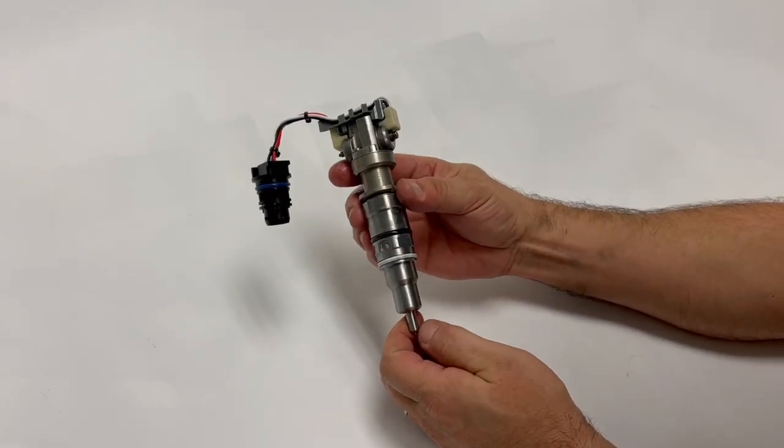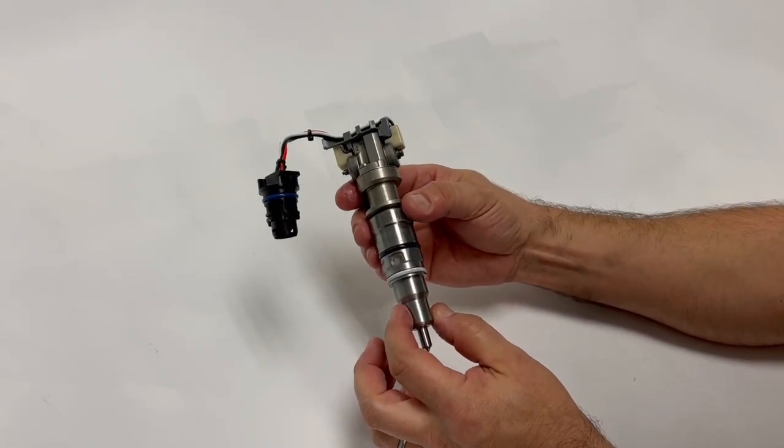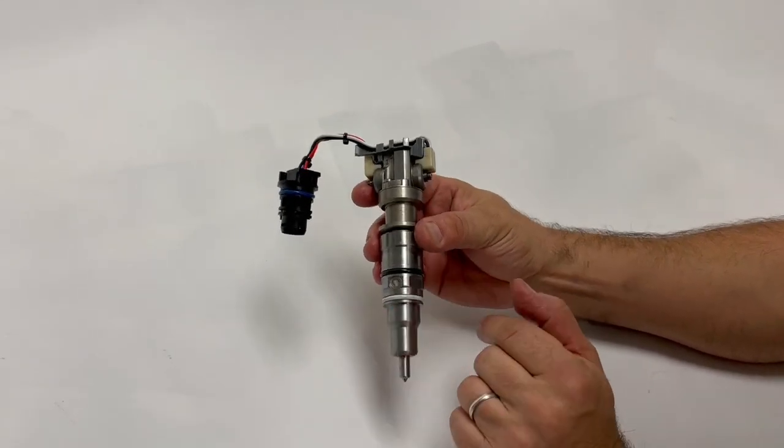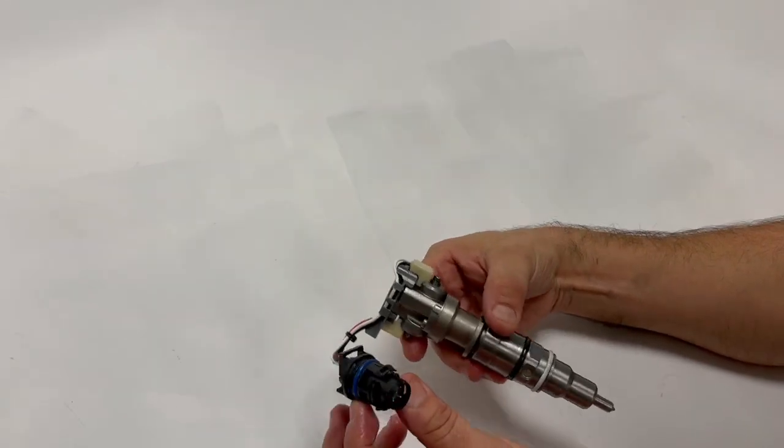The fuel injector contains three serviceable o-rings and a copper sealing washer. So these two can be replaced, this can be replaced, and this can be replaced.